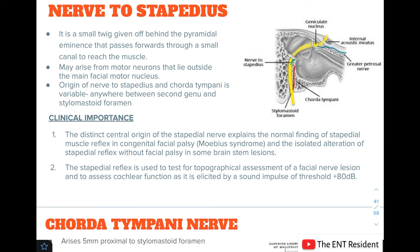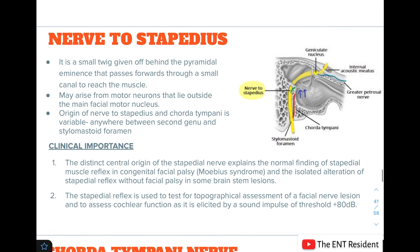The nerve to stapedius is the second branch of the facial nerve. It is a very small twig given off behind the pyramidal eminence, passing through a small canal to supply the stapedius muscle. Its origin is variable — it can arise anywhere between the second genu and the stylomastoid foramen, but most commonly from the second genu. Clinically, the central origin of the stapedial nerve explains the normal finding of a stapedial muscle reflex in congenital facial palsy in Möbius syndrome. The stapedial reflex is also an important test for topographical assessment of facial nerve lesions and for cochlear function assessment, as it is elicited by a sound impulse of +80 decibels.